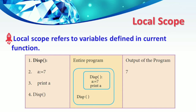Local scope refers to variables defined in the current function — a function will first look up for a variable name in its local scope. Look at this example: the function definition has `a = 7`, which is the variable name declared inside the function. So it is a local scope variable.